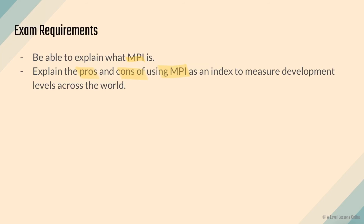MPI is very similar to HDI, but HDI is more on a global scale. MPI is very specific — it focuses only on poverty. HDI covers a wider range of development including higher levels of societal living standards and GNI, which reflects economic growth. So HDI is macro-scale, while MPI focuses specifically on poverty at a smaller scale.